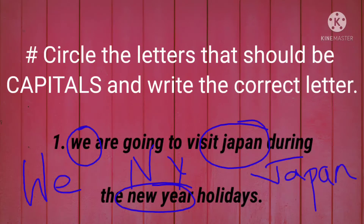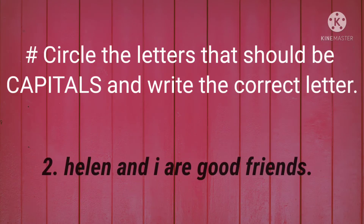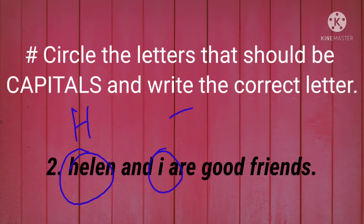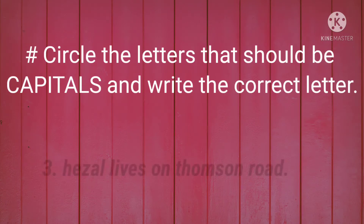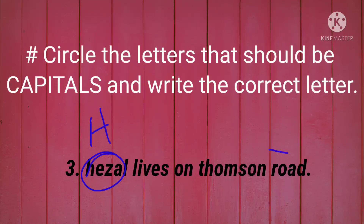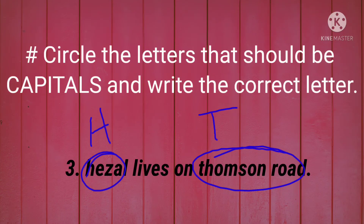Second sentence: 'Helen and I are good friends.' Helen is a name, so H in Helen will be capital, and I is always written in capital — so Helen and I will be capital. Third sentence: 'Hazel lives on Thompson Road.' Hazel is a name, so H in Hazel will be capital, and Thompson Road is a place, so T in Thompson will be capital.